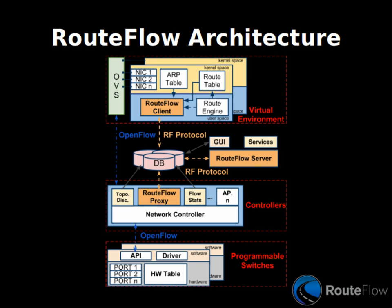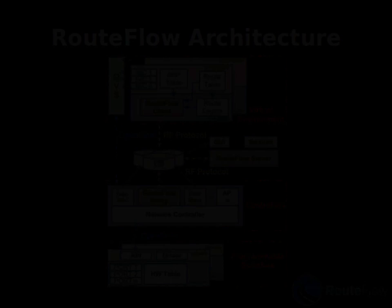Communication between the modules is based on a JSON-based IPC through a NoSQL database that also stores the core system state. In addition to being the data plane APIs, we use OpenFlow to program the virtual switches to which the RouteFlow client VMs are attached and to deliver control plane packets to and from the virtual interfaces.